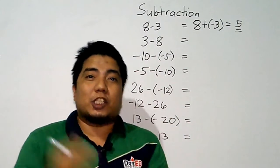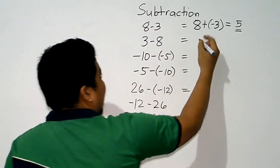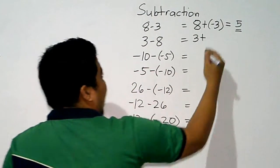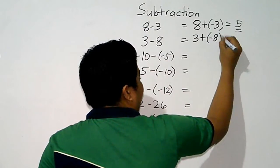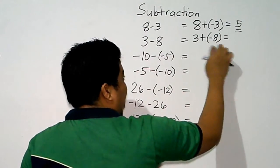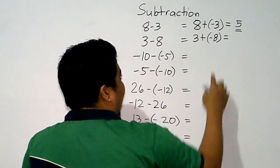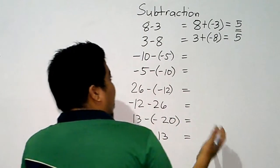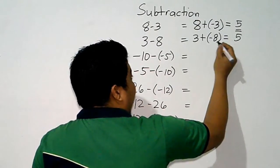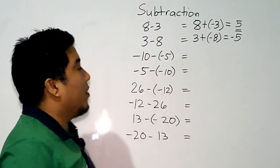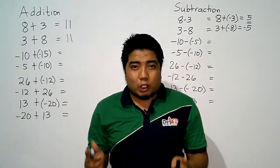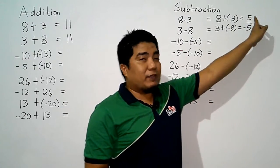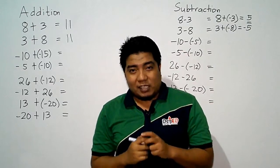Now what if we interchange the subtrahend and the minuend? 3 minus 8: we copy the 3, change minus into plus, and change positive 8 into negative 8. Again, two numbers with different signs, so we subtract the values — 8 and 3 — giving us 5. The bigger value is 8, which is negative, so our answer is negative 5. As you can see, in subtraction if you interchange minuend and subtrahend the answer is not the same — here we have 5 and negative 5, while in addition we had both positive 11.